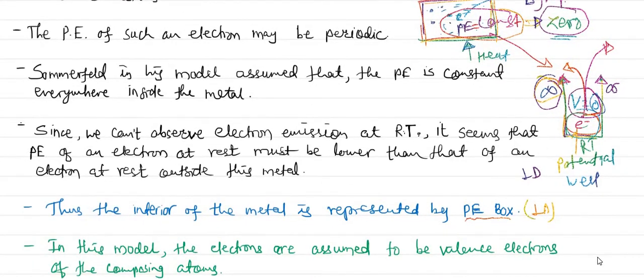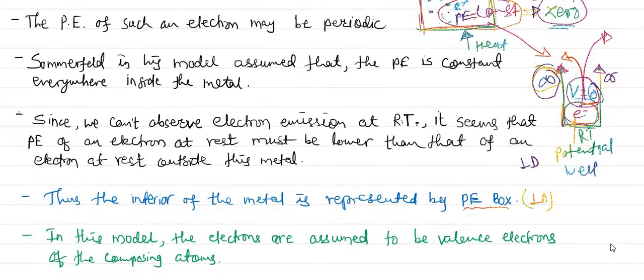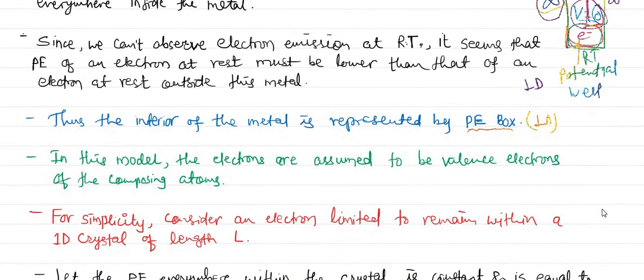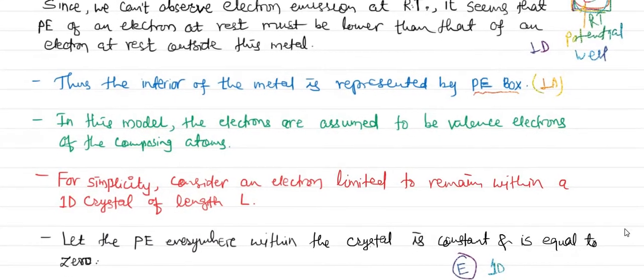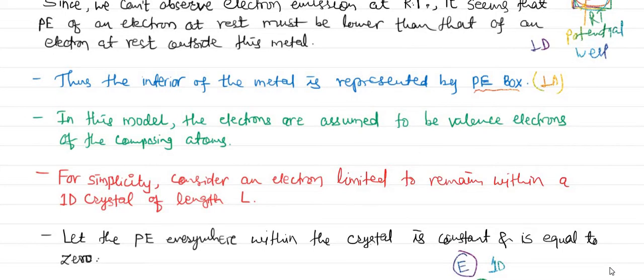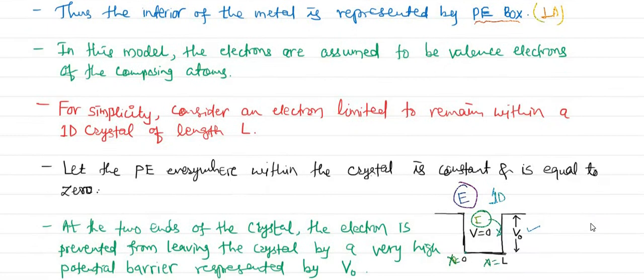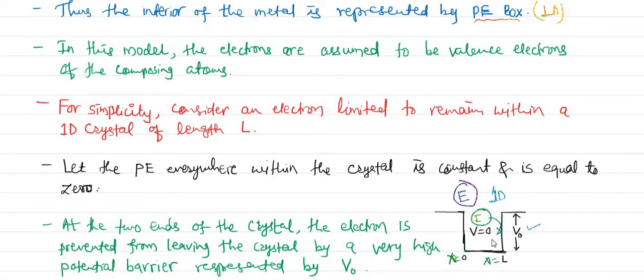By considering the potential energy well, we have treated an electron present in a metal as an electron trapped in a one-dimensional box — first for simplicity, and then we will apply the same analogy to the three-dimensional box. According to Sommerfeld, the particle cannot come out of the box at room temperature, and therefore the potential inside the box or potential well must be zero.